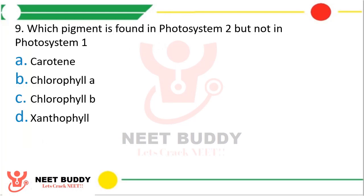Question 9. Which pigment is found in photosystem 2 but not in photosystem 1? Option A: Carotene, option B: Chlorophyll A, option C: Chlorophyll B, or option D: Xanthophyll. The correct answer is option B — chlorophyll A is found in photosystem 2 but not in photosystem 1.